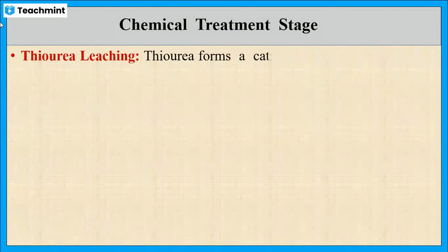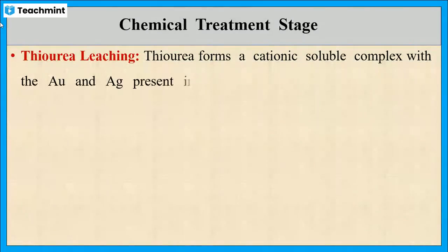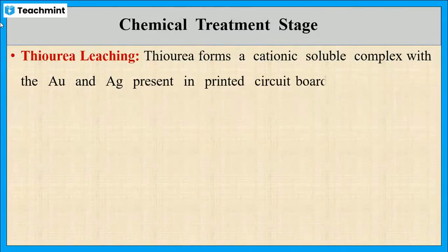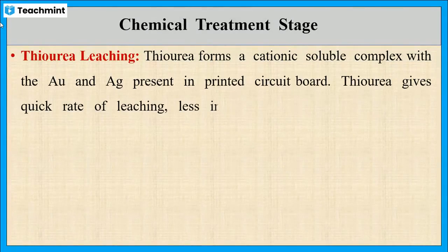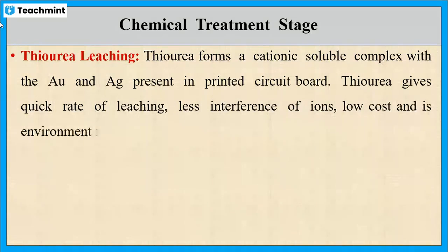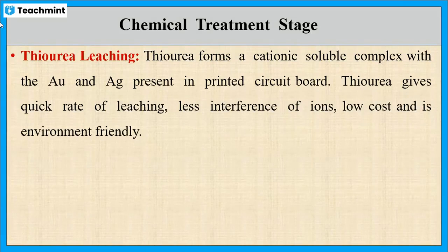Thiourea is another leaching agent which can form cationic complexes with gold and silver. It is a cheaper leaching agent that gives a quick rate of leaching.